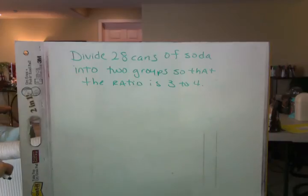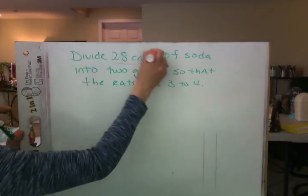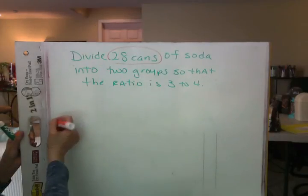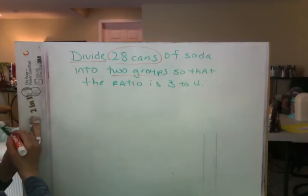So tell me, what's the important information that I should circle and underline in this word problem, Jared? Divide 28 cans of soda, two groups, and 3 to 4.